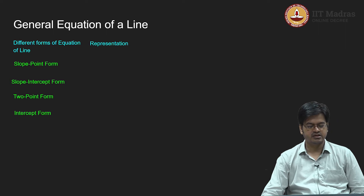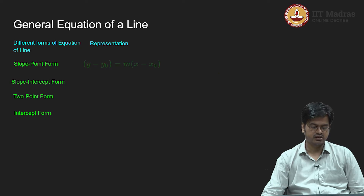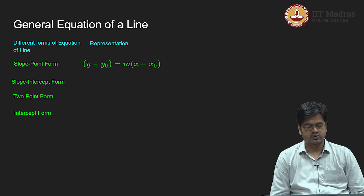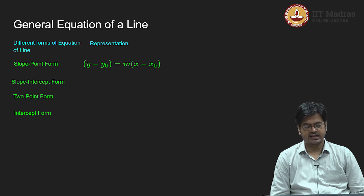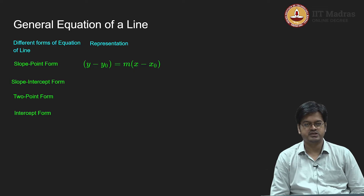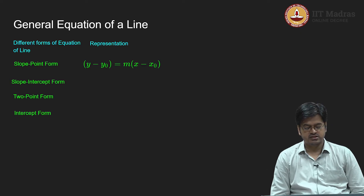We come up with an equation — the algebraic representation of this line with slope m and point (x₀, y₀) — as y minus y₀ is equal to m times (x minus x₀). When you come to slope-intercept form, suppose the x-intercept is given to me; if I have been given an x-intercept then the y-coordinate of that point will be 0. So let us say x-intercept is d; in that case my equation from slope-point form becomes y minus 0 is equal to m times (x minus d).